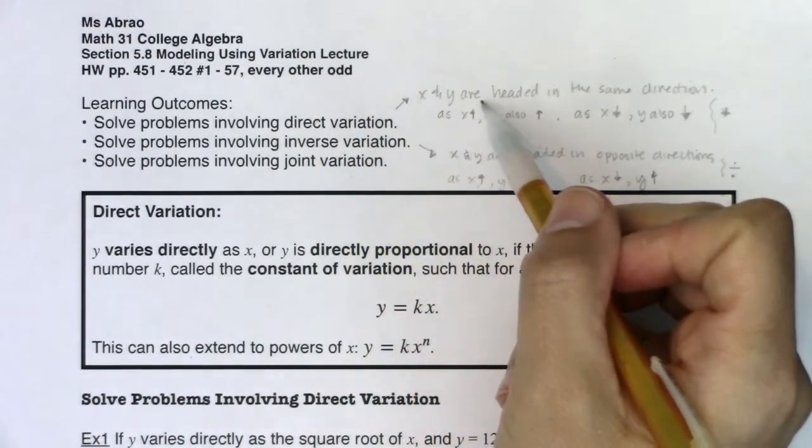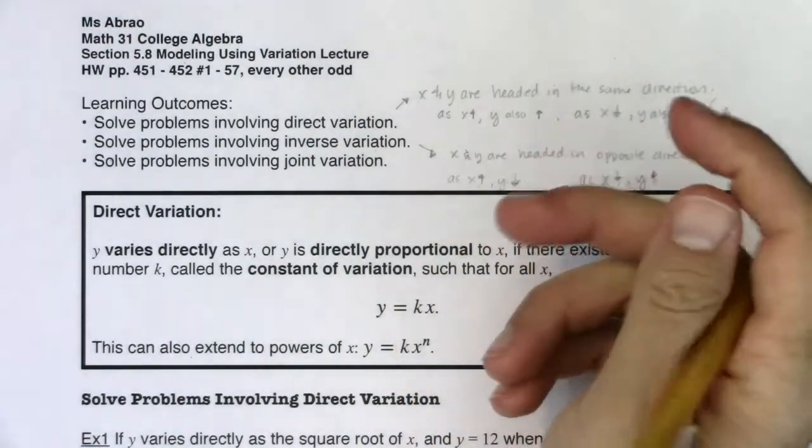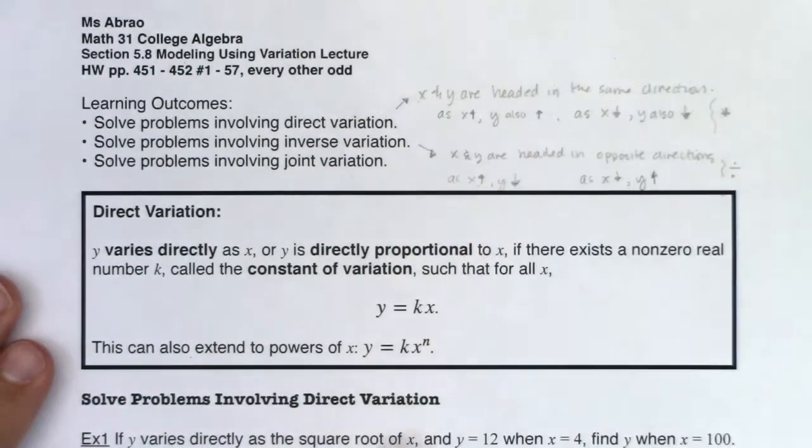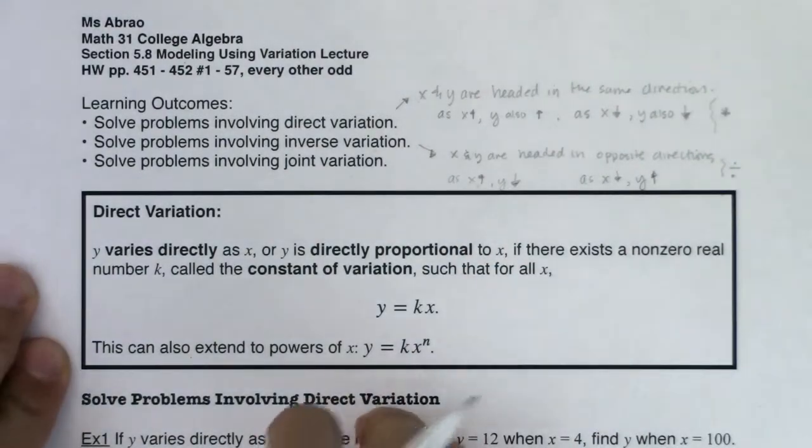Maybe there's an x, y, and a z, or an x, y, z, and w. Really depends on what the words say in the problem. So with that, let's start looking at direct variation.